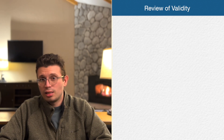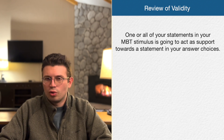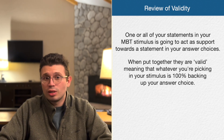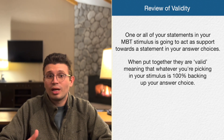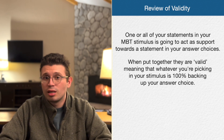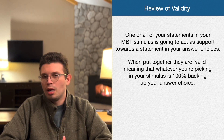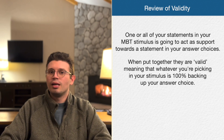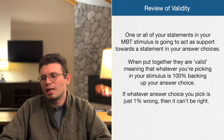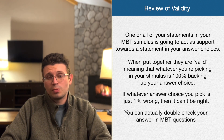In must be true questions, one or all of your statements in your stimulus act as support toward a statement in your answer choices. When put together, your stimulus and answer choice are valid — whatever you're picking is 100% backed up. This sets the bar extremely high: if an answer choice is even one percent wrong, it can't be right. It also means you can truly double-check your answer on must be true questions.